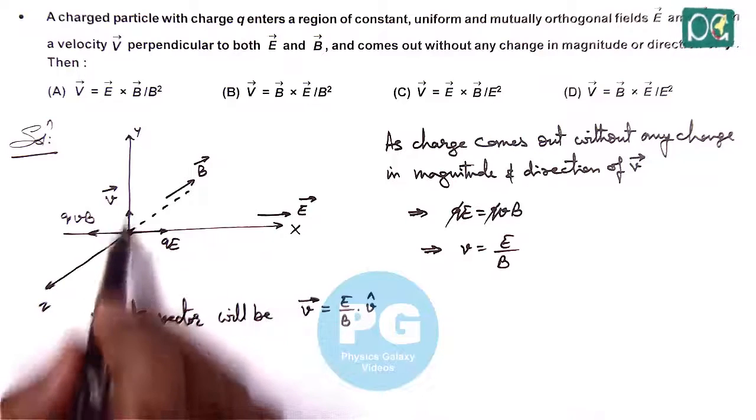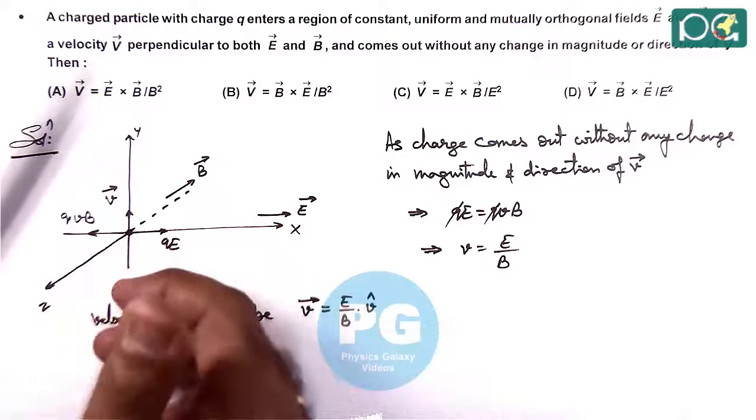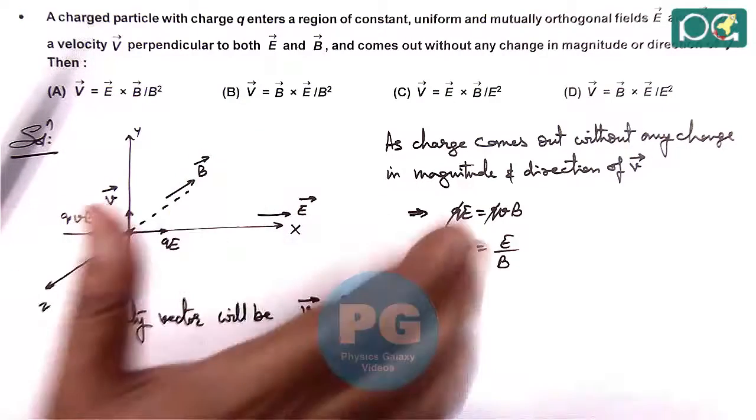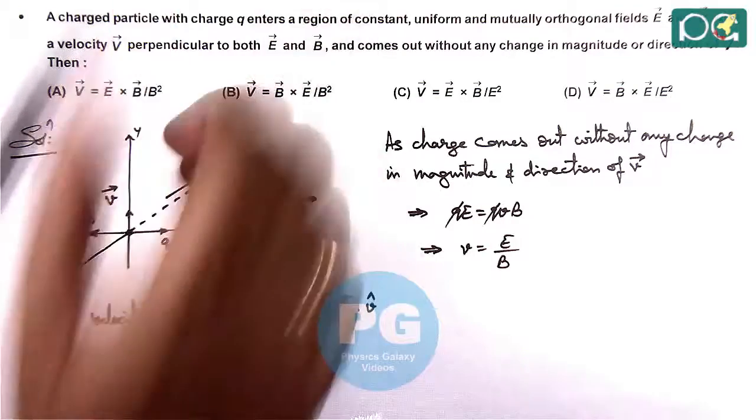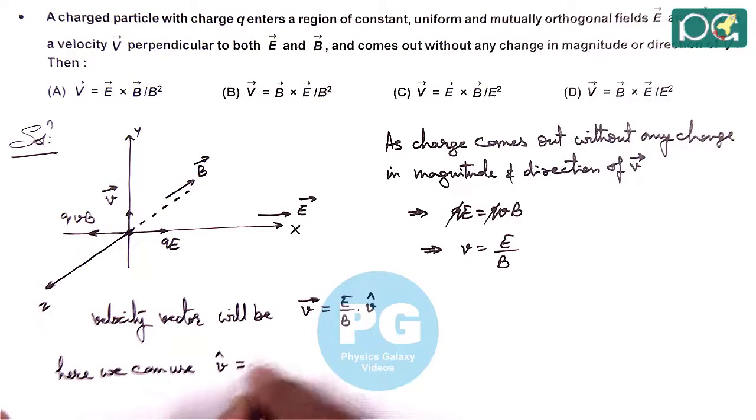So here we can see in y direction, the vector which is coming up is E cross B. If we take the cross product of E and B, you can see by right hand thumb rule direction is coming in y direction. So here we can use V cap is equal to E cross B divided by EB, because this is the vector in y direction divided by the magnitude of E and B.